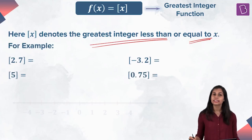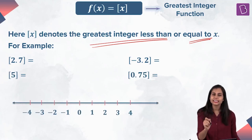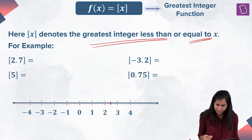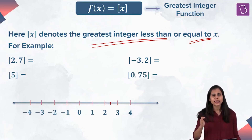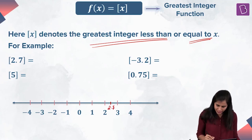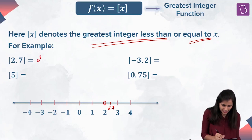If my x is 2.7, what is bracket 2.7? It's the greatest integer strictly less than 2.7. Well, 2.7 is strictly sitting between two consecutive integers, 2 and 3. The greatest integer strictly less than 2.7 is 2, which is lying on the immediate left of 2.7. That means the answer is 2.